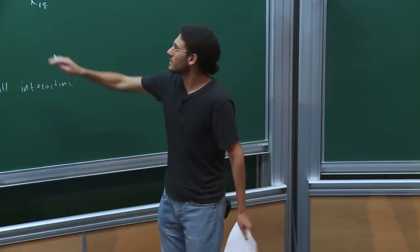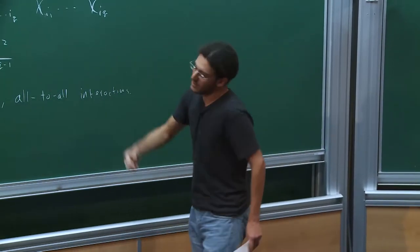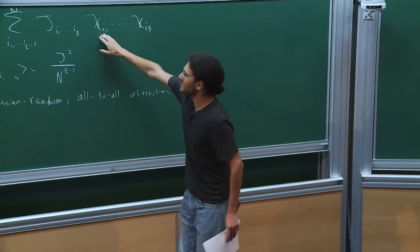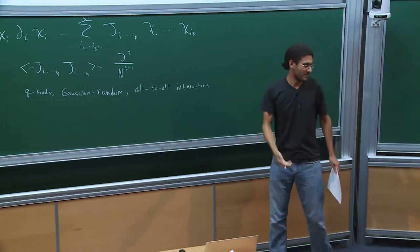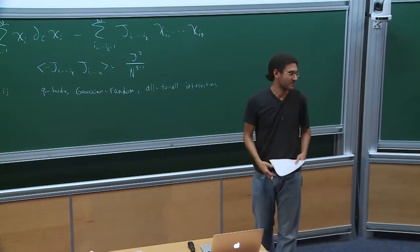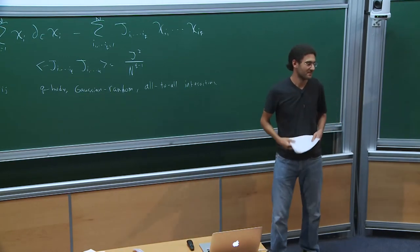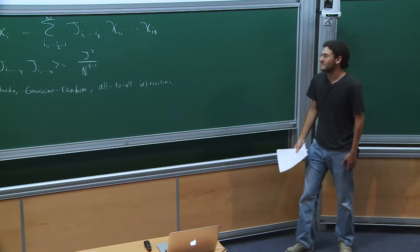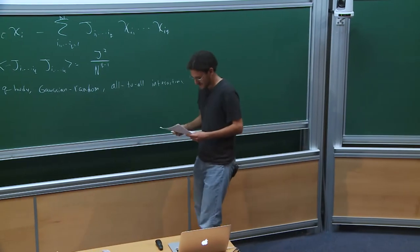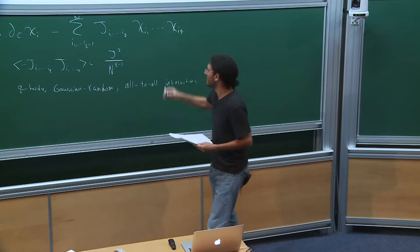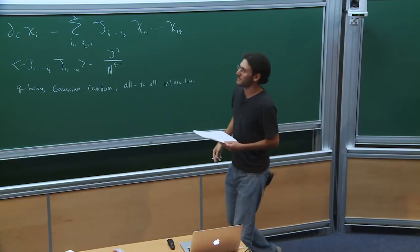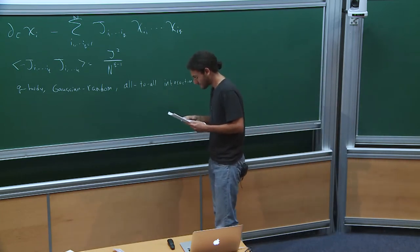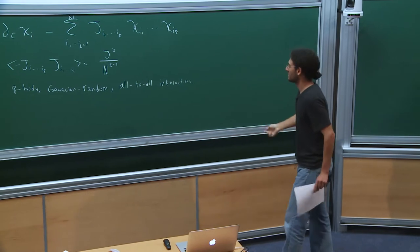You can also write each Majorana chi as c plus c-dagger, since a Dirac fermion is two Majorana fermions, and rewrite the Lagrangian as a sum of Dirac Lagrangians that don't conserve particles. The difficulty is essentially the same in both cases. That's the model.